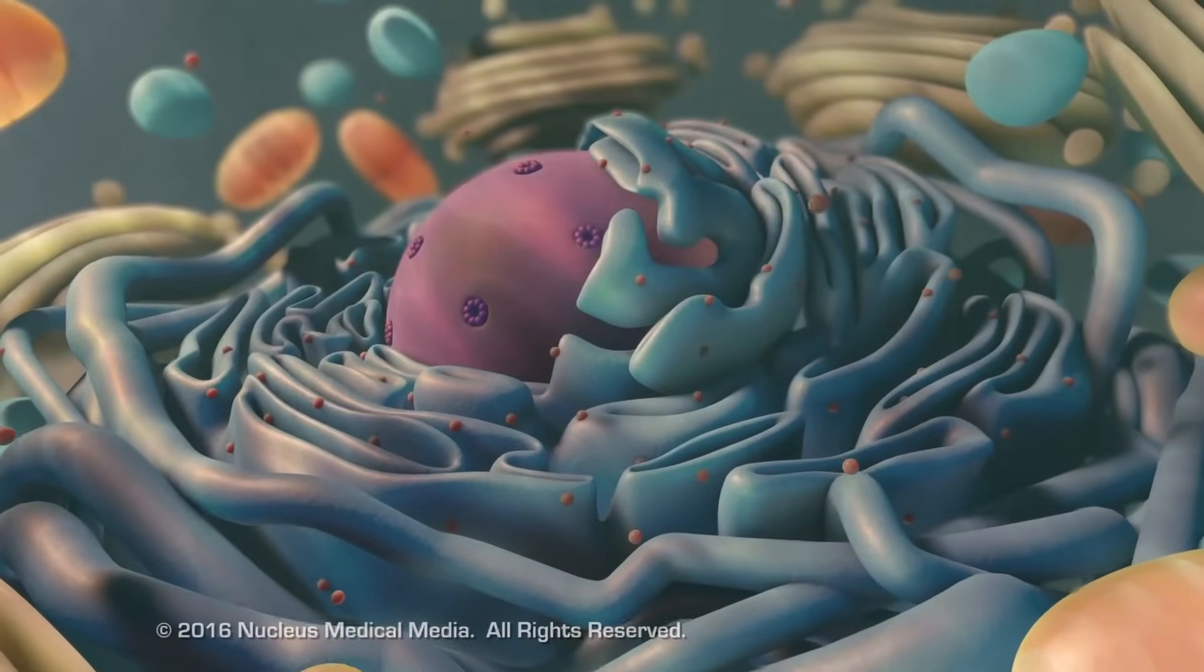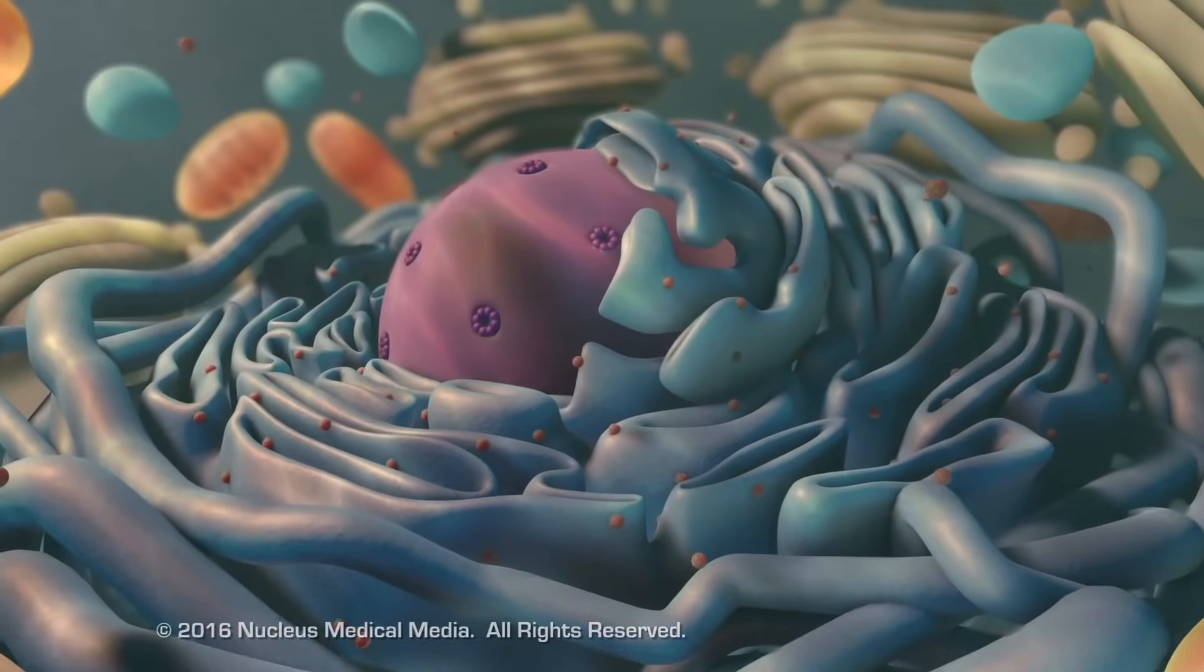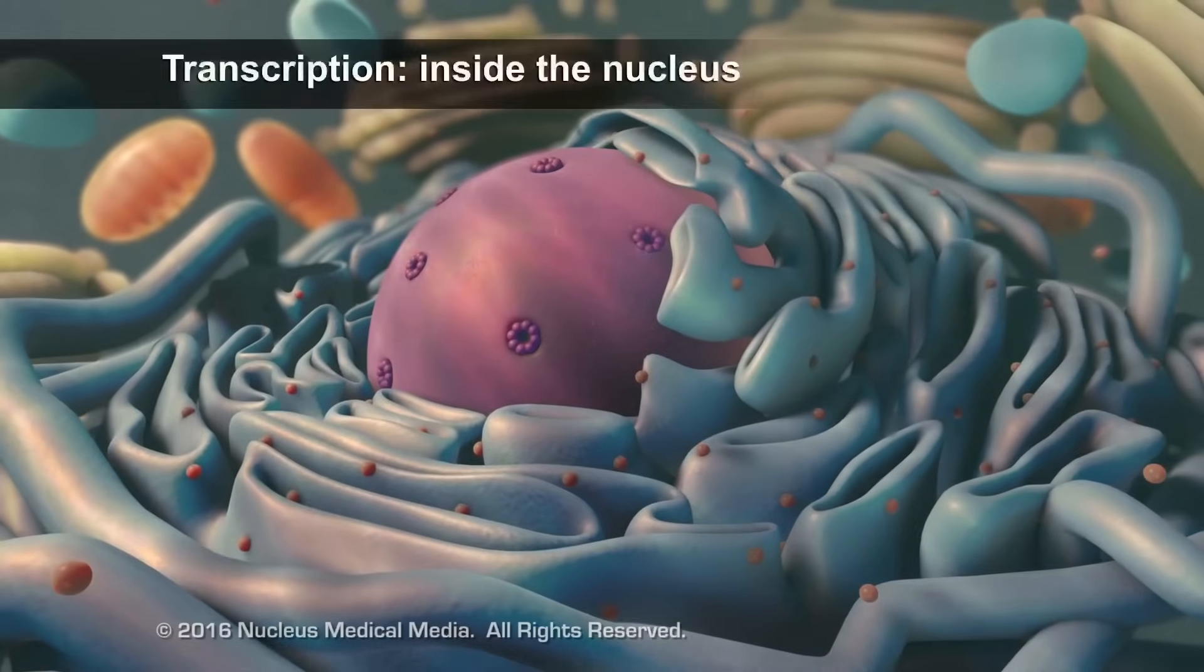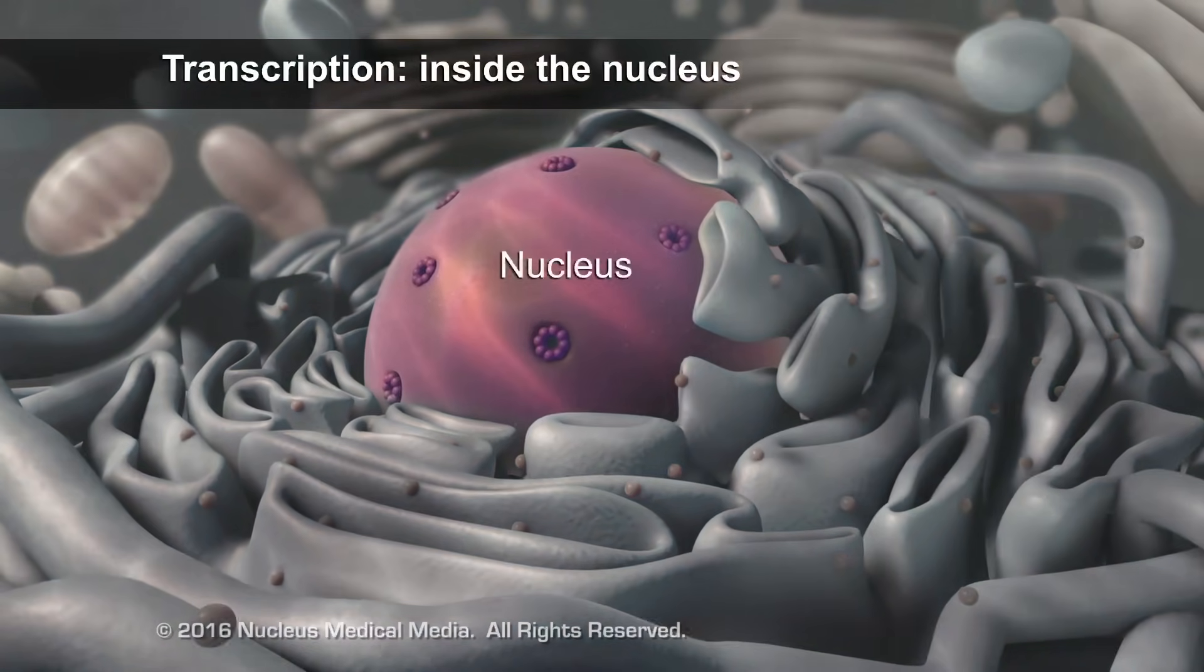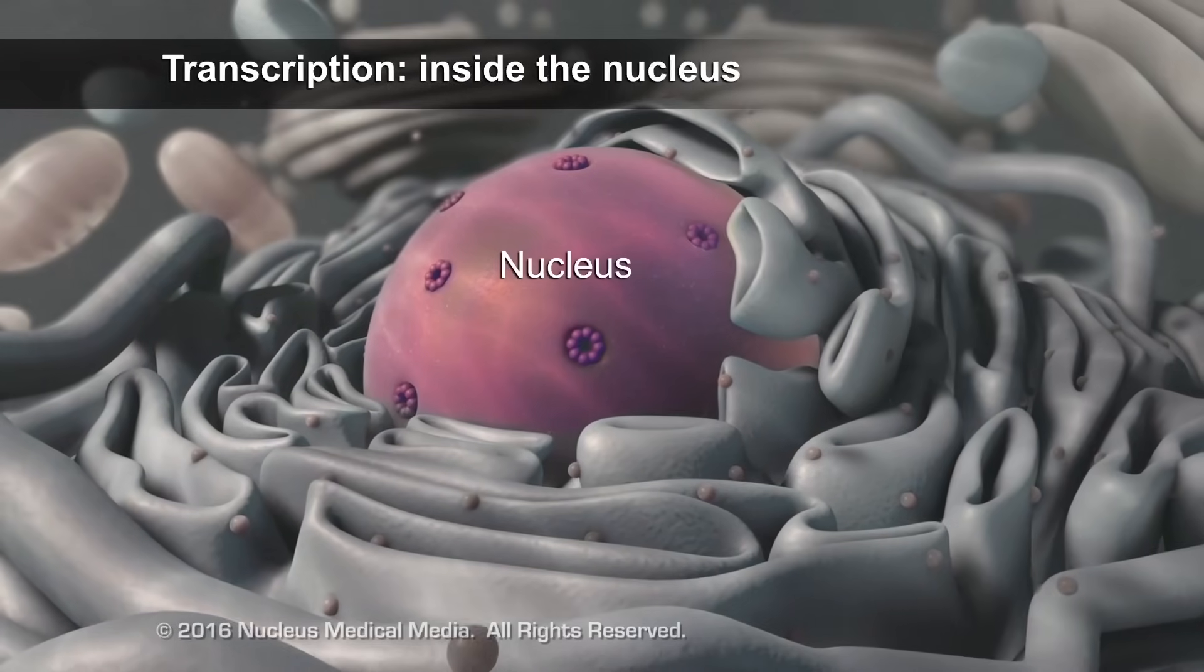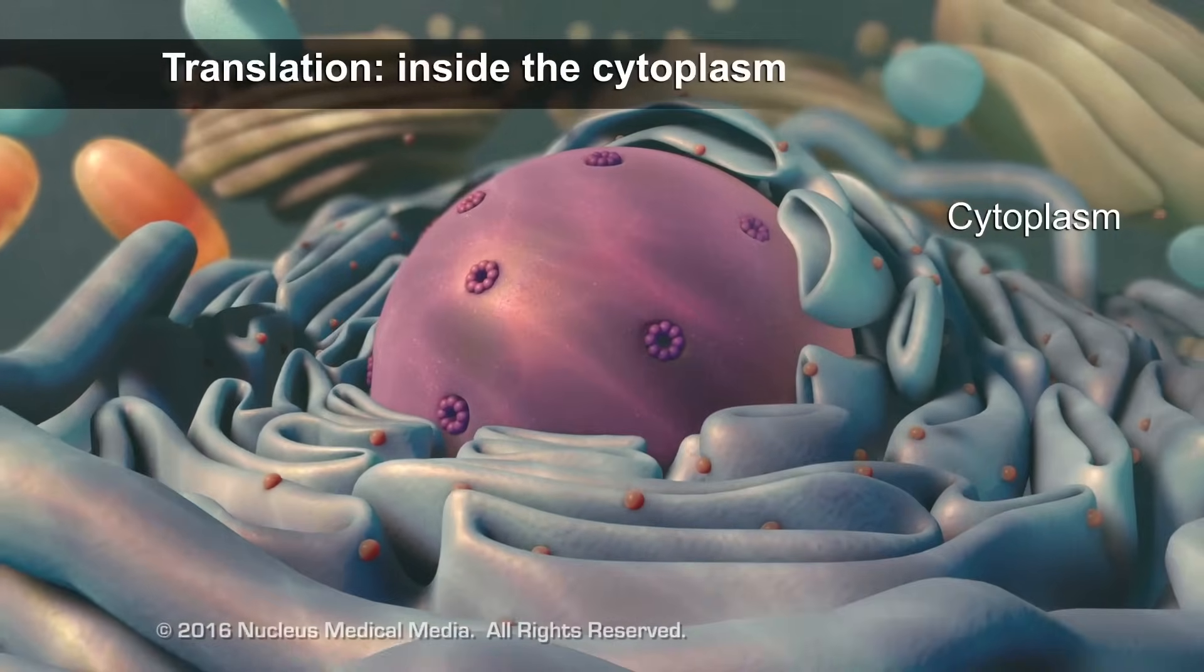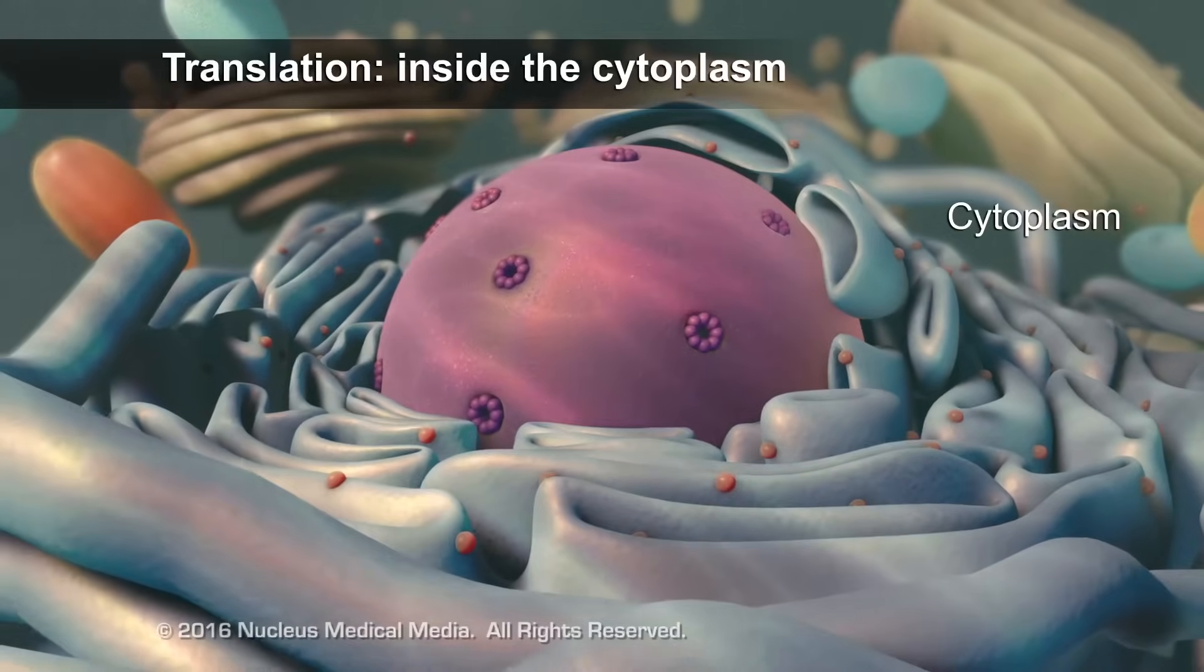The assembly of amino acids into proteins takes place in cells. The first stage, transcription, occurs in the nucleus. The second stage, translation, occurs in the cytoplasm.